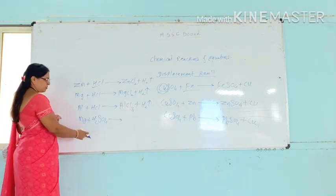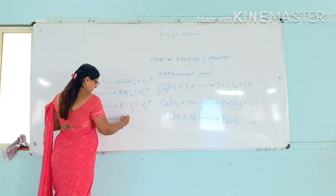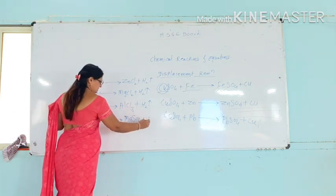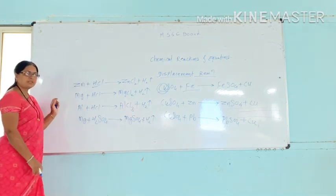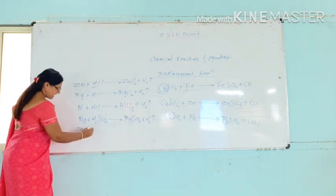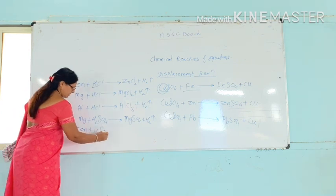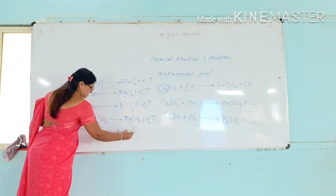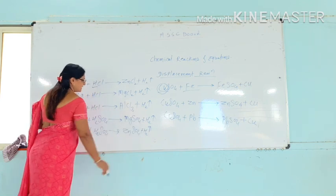In the reaction of magnesium with sulfuric acid, magnesium sulfate is formed plus hydrogen gas. So magnesium sulfate and hydrogen gas are the products of this displacement reaction.